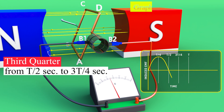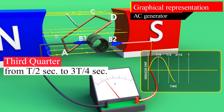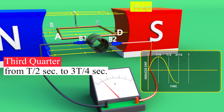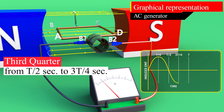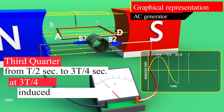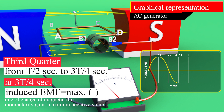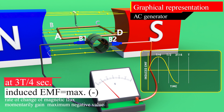During the third quarter of rotation, from T/2 to 3T/4 seconds, part AB goes up and part CD moves down. In this period, the induced EMF increases from zero to maximum value, but with opposite polarity. At 3T/4 seconds, the rate of change of magnetic flux momentarily reaches its maximum value, but compared to the position at T/4 seconds, the induced EMF gains its negative maximum value.